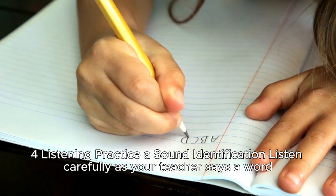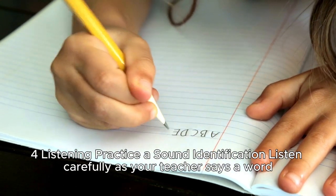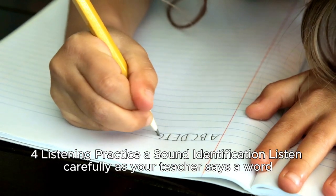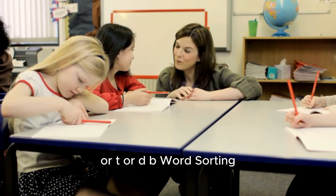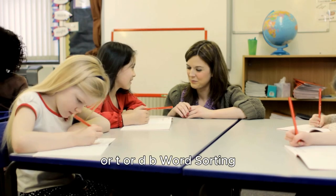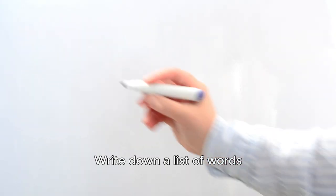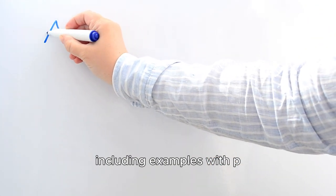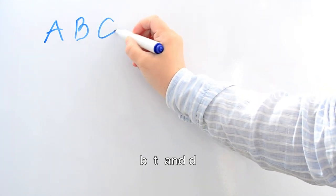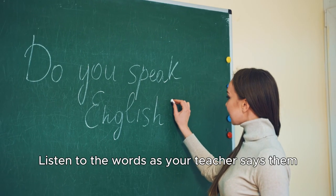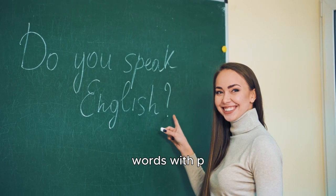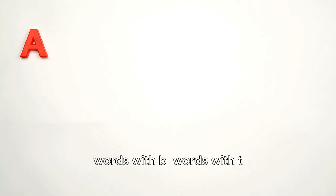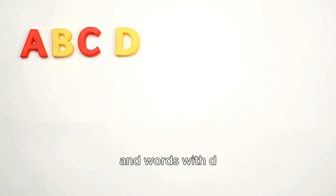Listening practice. Sound identification: Listen carefully as your teacher says a word. Identify whether the sound you hear is P or B, or T or D. Word sorting: Write down a list of words, including examples with P, B, T, and D. Listen to the words as your teacher says them and sort them into four groups: words with P, words with B, words with T, and words with D.